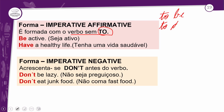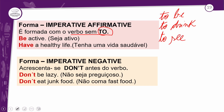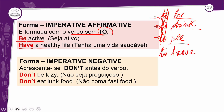Na hora de formar o imperativo, a partícula 'to' não vem acompanhada. Você retira o verbo do jeito que ele está, sem essa partícula. Perceba que 'to be' vem para cá só com 'be': 'be active', seja ativo. 'Have a healthy life', tenha uma vida saudável — vem do verbo 'to have'. Ele sai com a estrutura do verbo, porém sem a partícula 'to'.